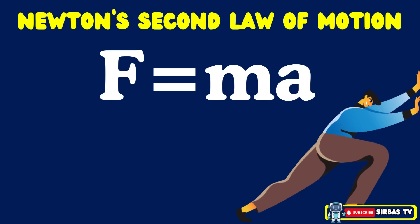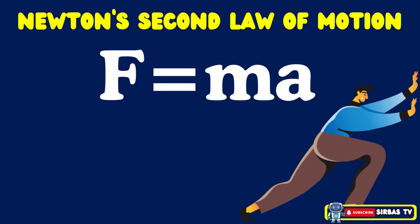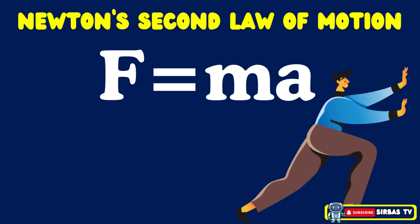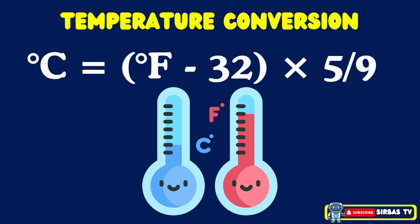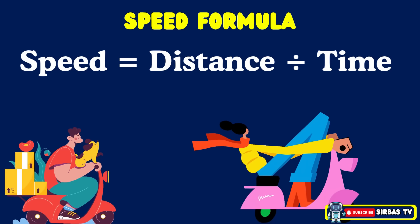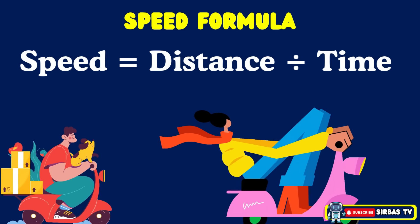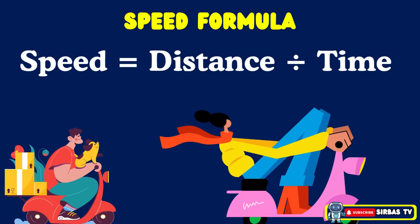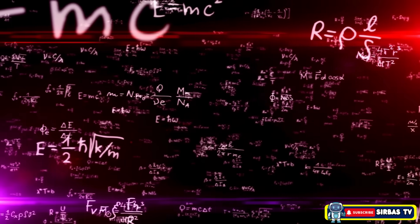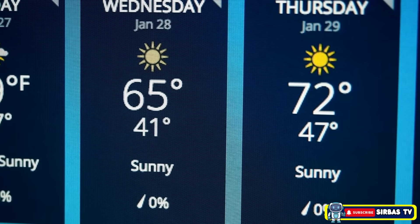A good example is Newton's second law of motion, written as force equals mass times acceleration, which explains how force, mass, and acceleration are connected. Another example is the temperature conversion formula: degrees Celsius equals the quantity of degrees Fahrenheit minus 32, multiplied by 5/9, which helps convert Fahrenheit to Celsius in weather and laboratory data. The speed formula — speed equals distance divided by time — shows how distance and time relate to describe how fast an object is moving. Math may seem scary at times, but it is actually one of science's most accurate languages. It can even predict the future, like weather forecasts or population growth.